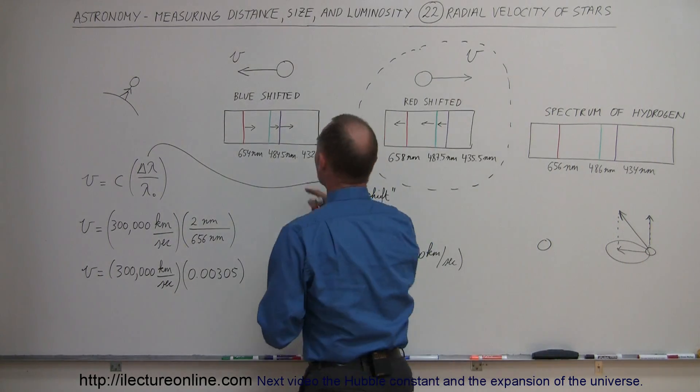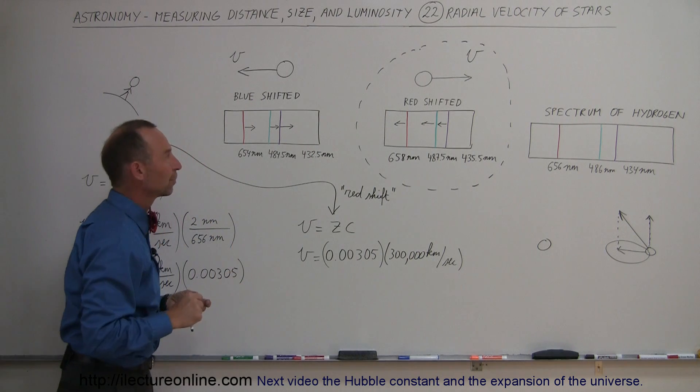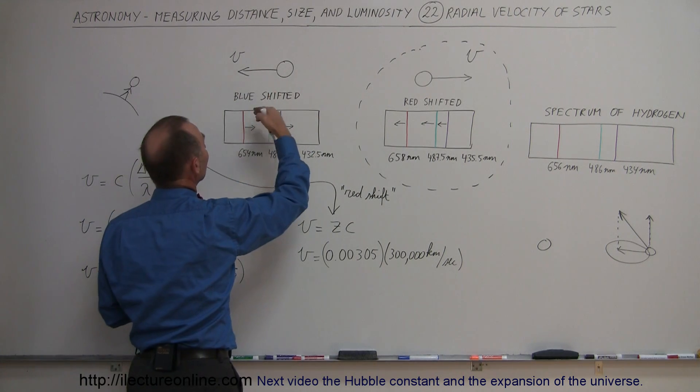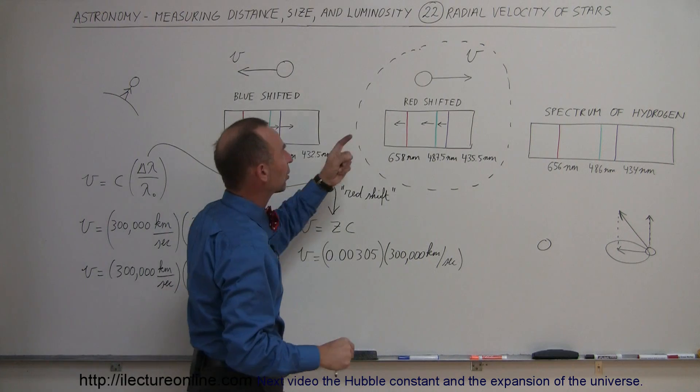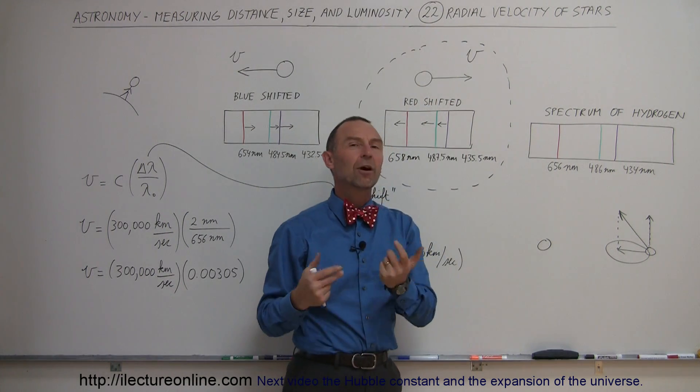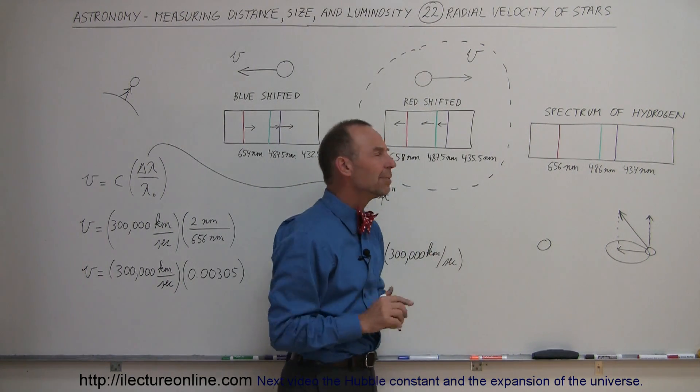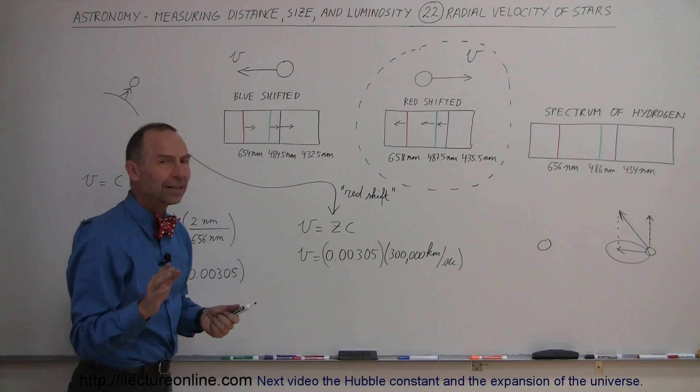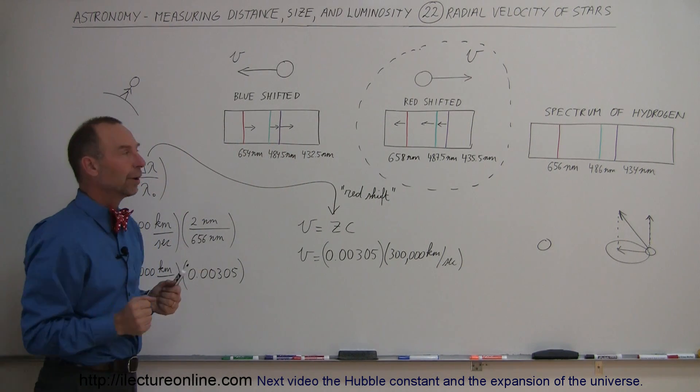So this component right here is the component we're talking about. If an object is moving towards us, we say the object is blue shifted. If an object is moving away from us, we say that the object is red shifted. What does that really mean? Well, first of all, let's find out how we can even tell that things are moving.